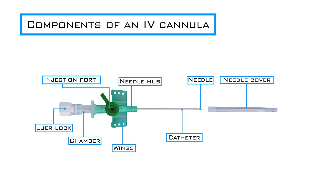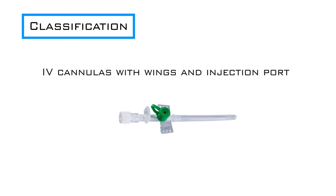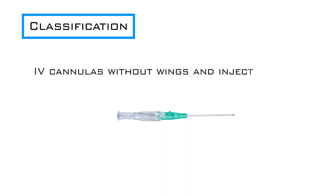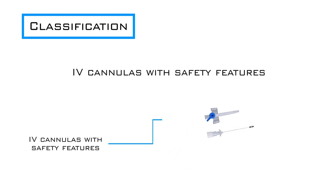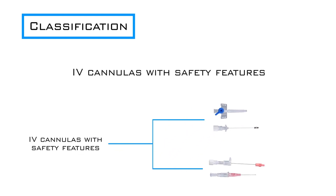Classification. IV cannulas can broadly be classified into: IV cannulas with wings and injection port, IV cannulas without wings and injection port, and Safety IV cannulas. Safety IV cannulas include a safety mechanism to prevent accidental needle stick injuries, and can further be classified as safety IV cannulas with wings and injection port, and without wings and injection port.